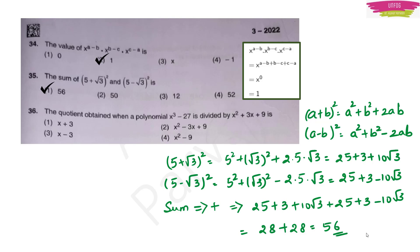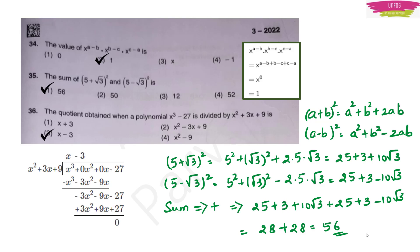The quotient when the polynomial x³ − 27 is divided by x² + 3x + 9: rewrite x³ − 27 as x³ + 0x² + 0x − 27 and perform the division. The quotient is x − 3 with remainder 0.